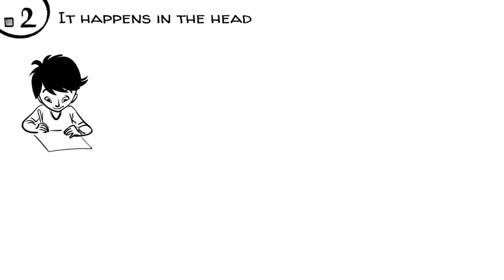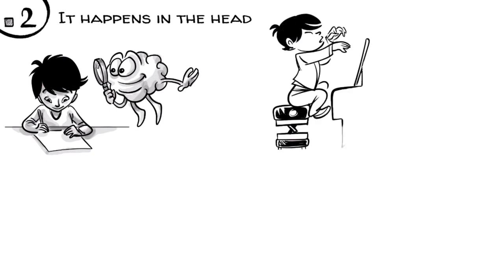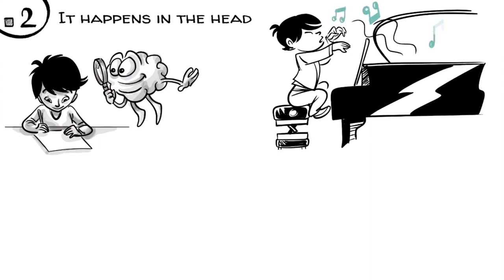It happens in the head. Whatever is on paper is merely a representation of mathematical thinking that happens in the brain, just like musical notes. What is on paper is just a representation of music that actually happens when someone plays the piano.